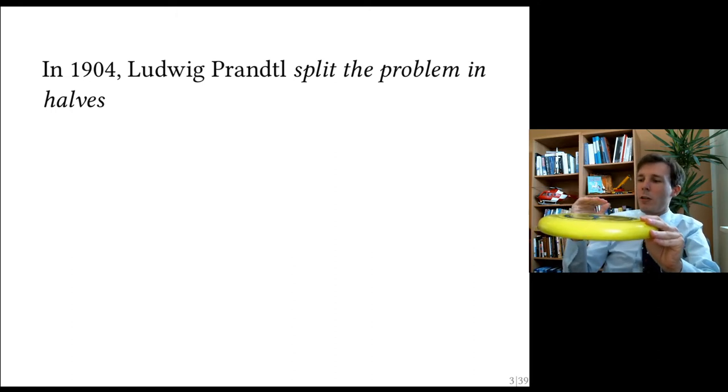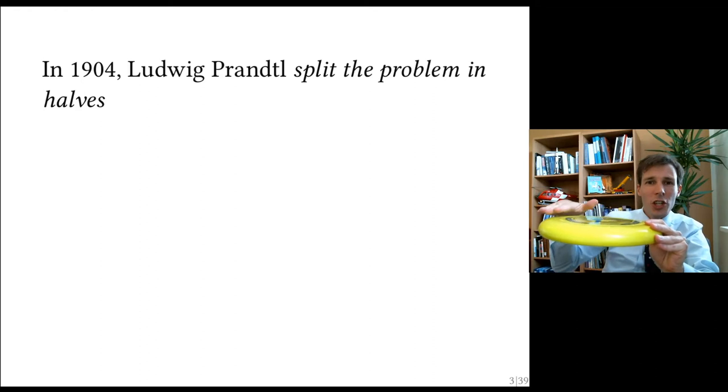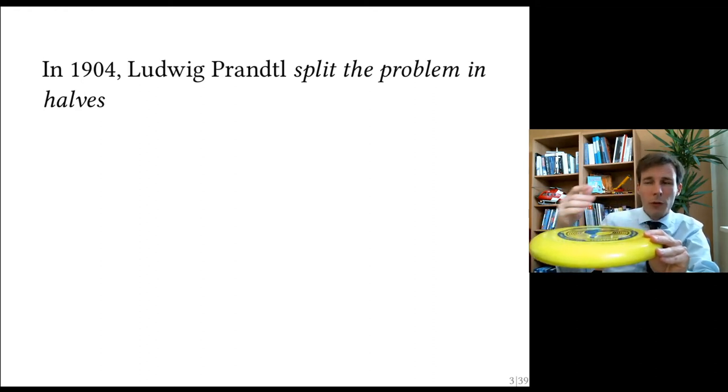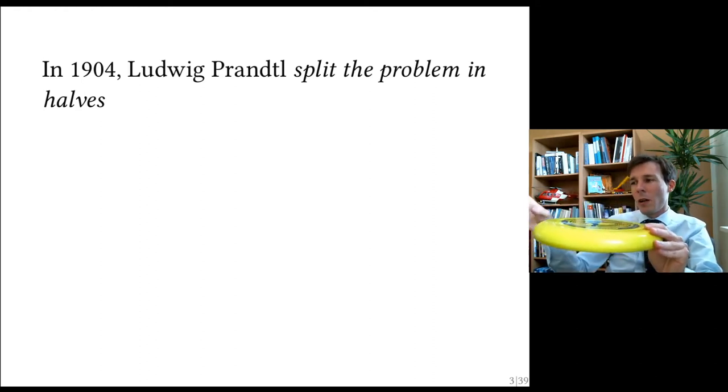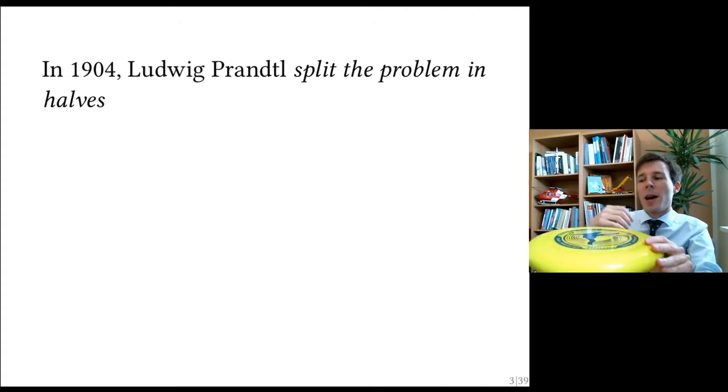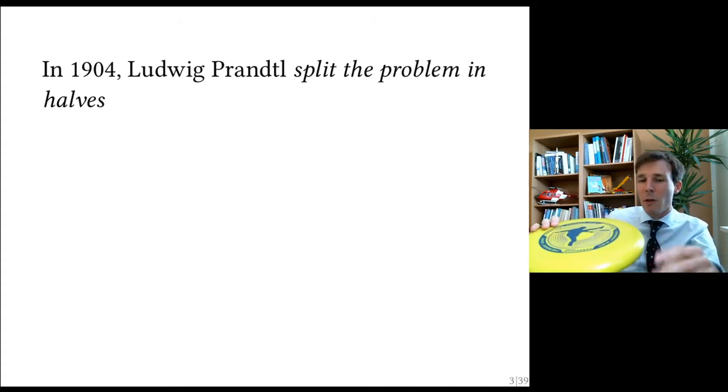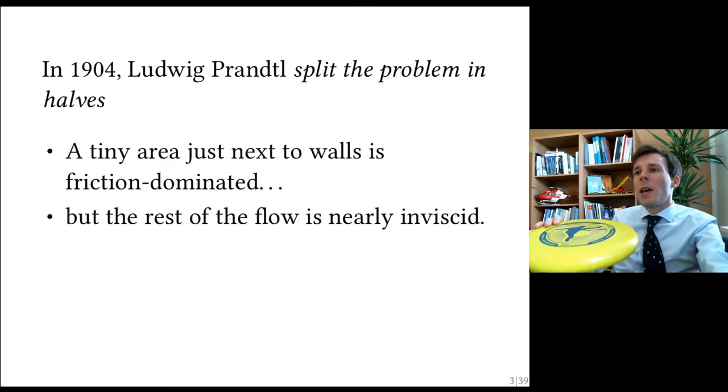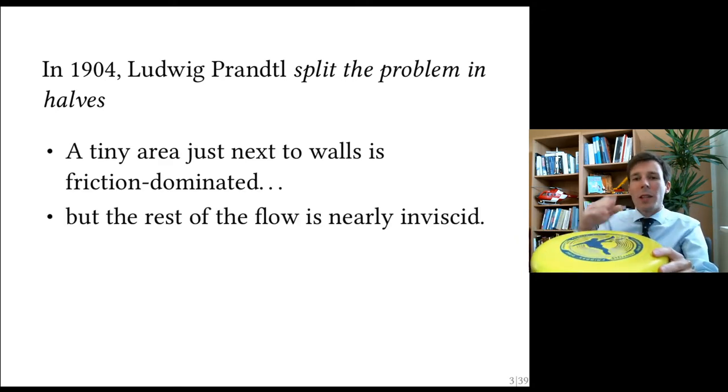Close to the Frisbee, the fluid flow is dominated by the friction, the shear of the wall on the fluid, and vice versa. While relatively far away from the Frisbee, maybe a few centimeters away, the flow is almost unaffected by shear and viscosity. It is an inviscid flow. And so, Prandtl said, we're going to split the problems in two halves.